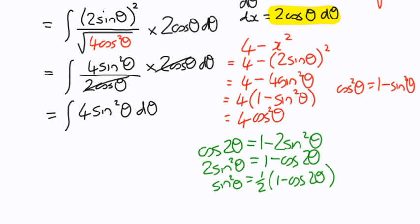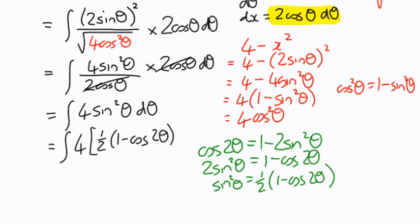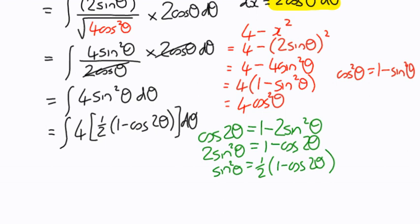I didn't say it was going to be an easy example. We now have 4 × ½ × (1 - cos2θ) dθ. The 4 times ½ gives 2, so we have the integral of 2 minus 2cos2θ with respect to θ, and we can actually perform that integration.